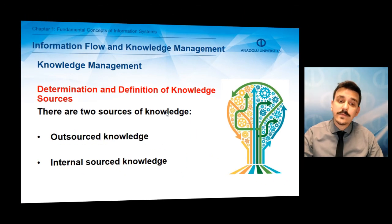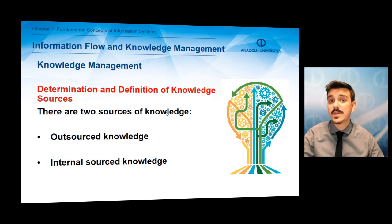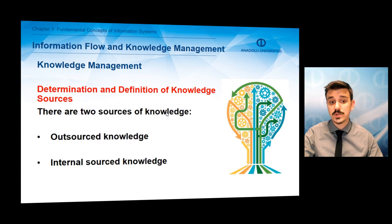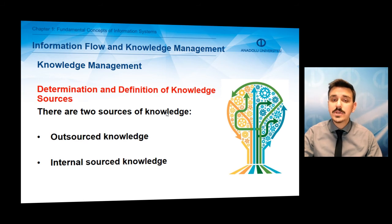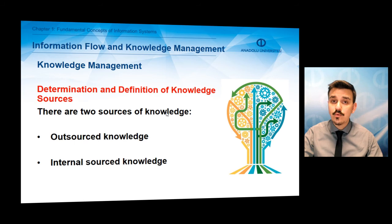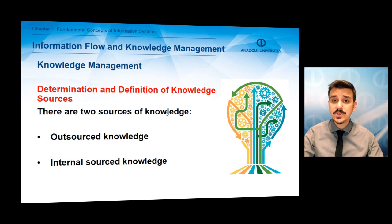The first step is determination and definition of knowledge sources. In order to manage knowledge, we must first acquire it, and to acquire knowledge, we must firstly determine the knowledge sources. There are two sources of knowledge: internal and external. External or outsource knowledge is acquired outside the business — from news, websites, or reports of governments and statistical institutions. Internal source knowledge includes the employees, documentations, books in the business, or the business database.